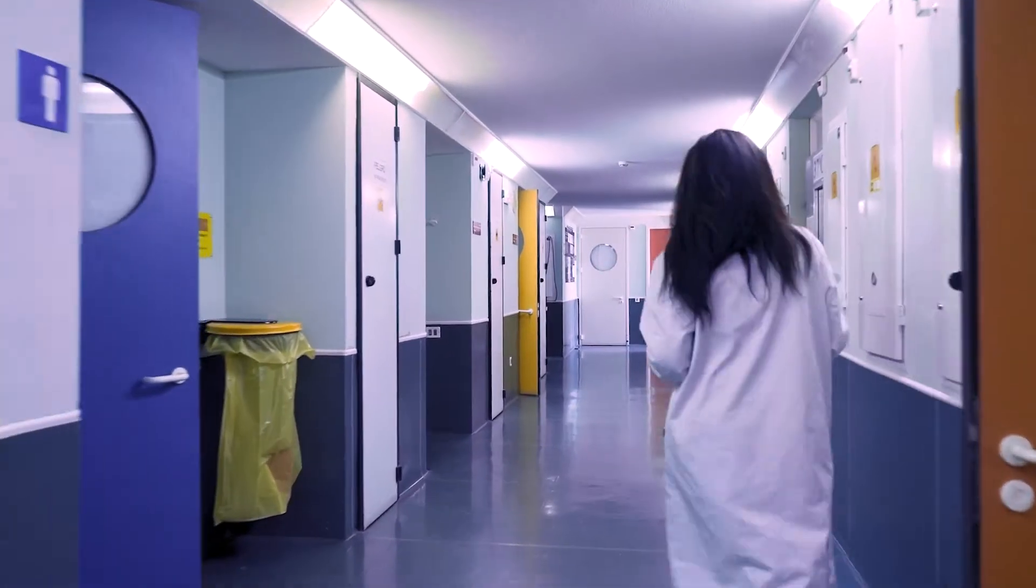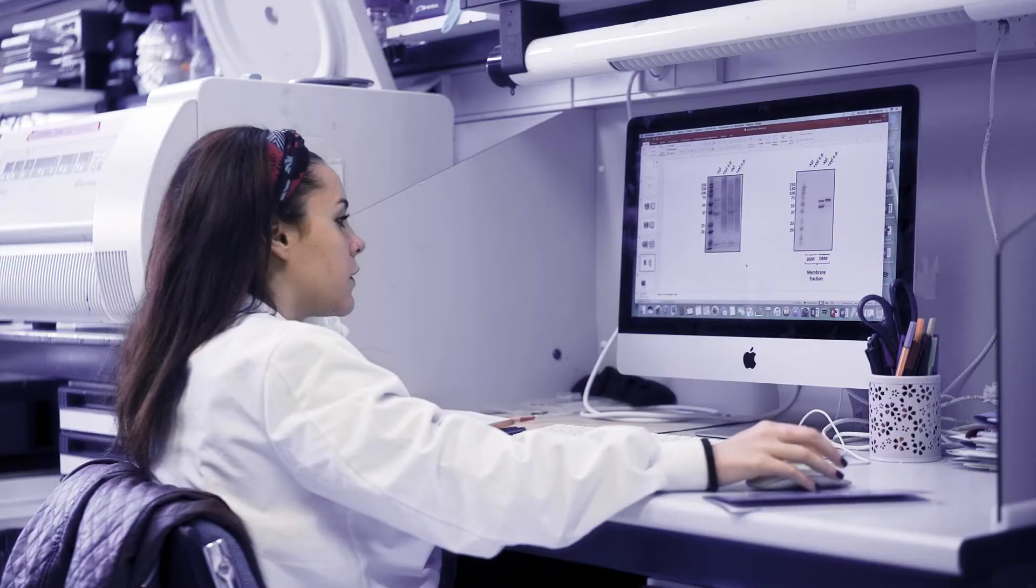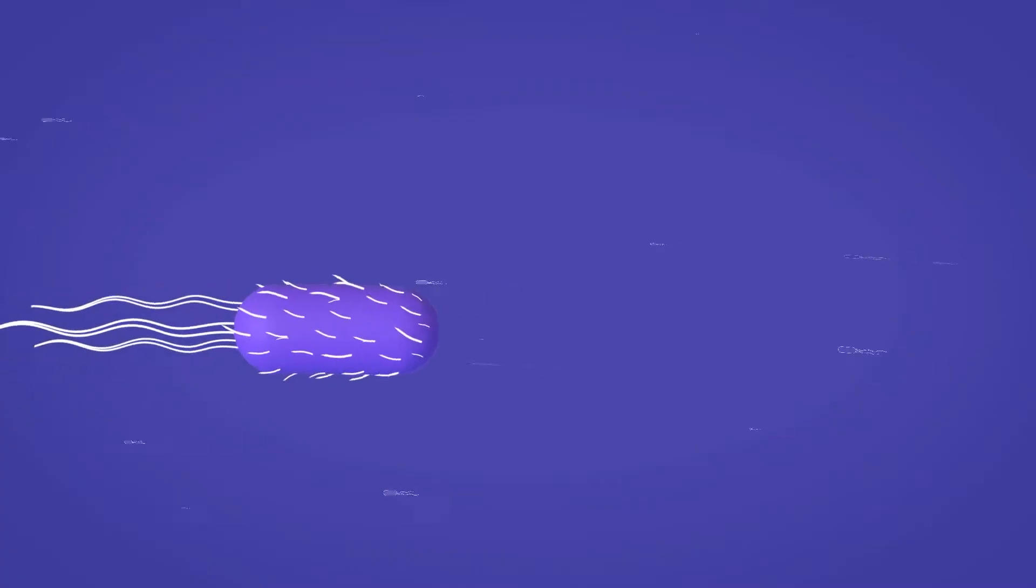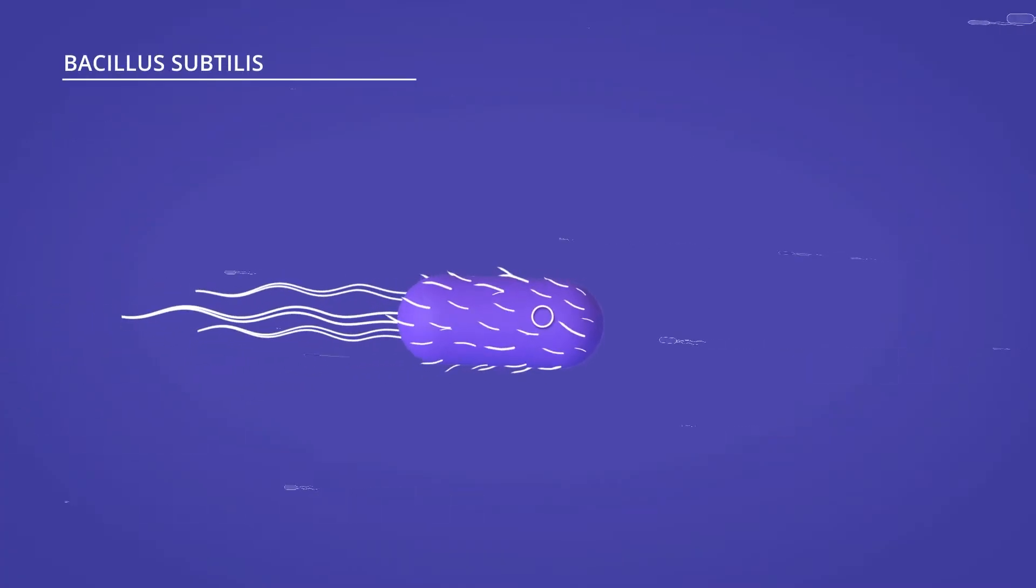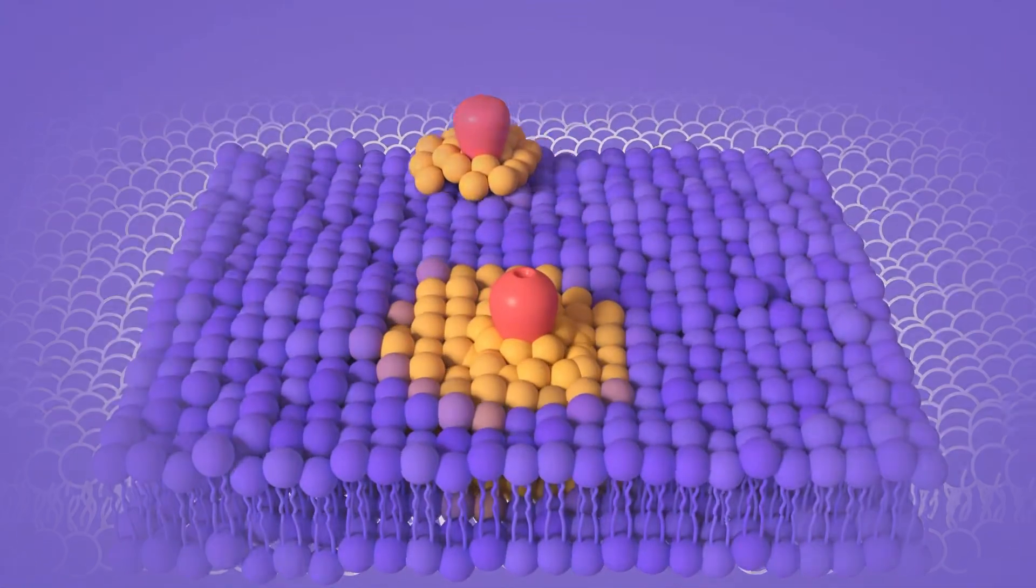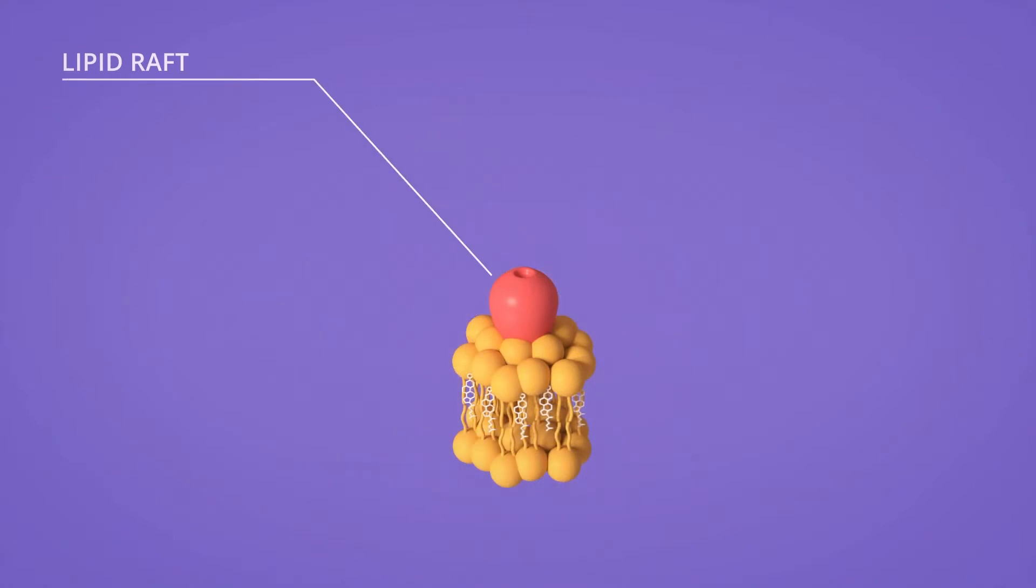This outlook on biotechnology changed a few years ago when researchers discovered that bacteria may have some sort of cellular compartments after all. They found that Bacillus subtilis bacteria create structures called lipid rafts. These structures are discrete regions of the plasma membrane that have a different lipid composition.